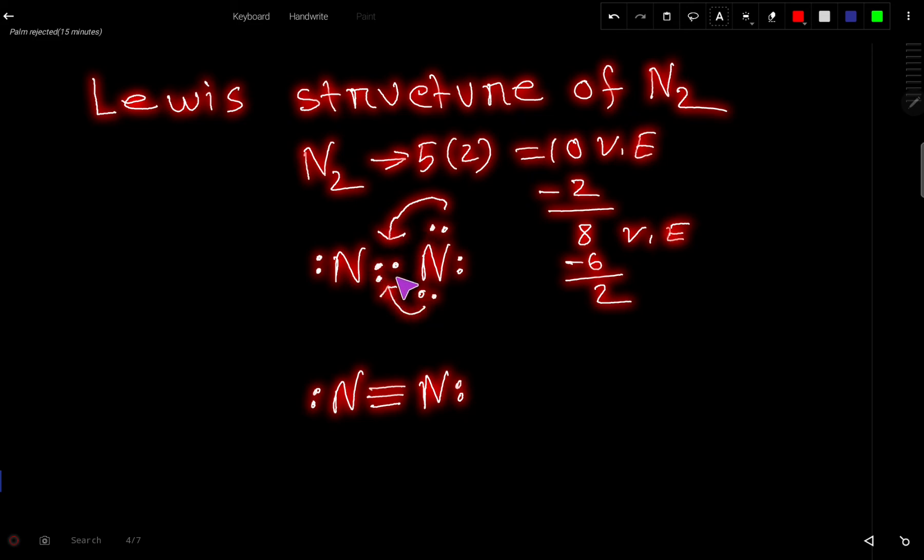So we are getting here, look at this. So we have to delete this. Now this nitrogen has 8 valence electrons and this nitrogen also has 8 valence electrons.